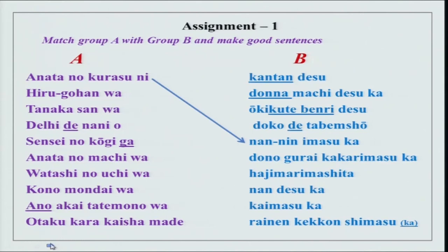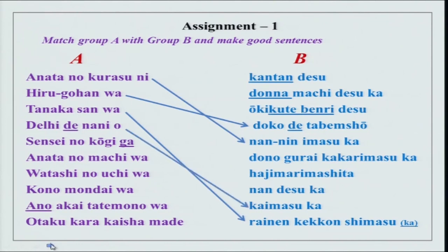The first one is: anata no kurasu ni nannin imasu ka. Hiru gohan wa doko de tabemashou. Doko de — place de — something wo shimasu. Tanaka san wa rainen kekkon shimasu — a statement — and Tanaka san wa rainen kekkon shimasu ka is a question. Deri de nani wo kaimasu ka — place de nani wo kaimasu ka. And donna is a question word which means 'which type of.'